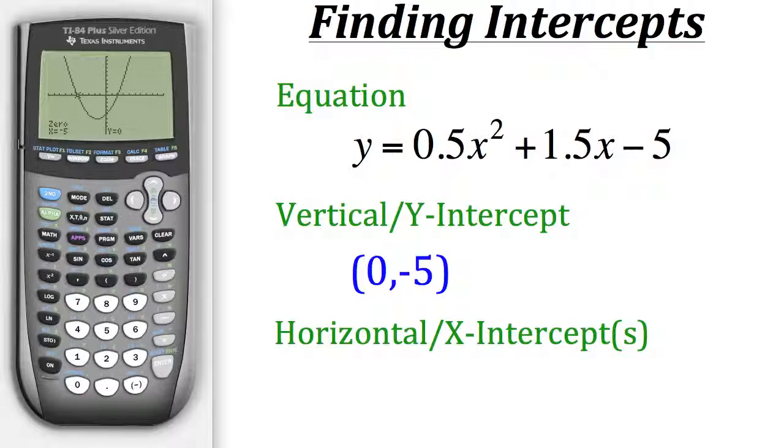So now from this we could see that this x-intercept occurs at x equals negative five. And of course our y-value will be zero. So one of our horizontal intercepts is negative five zero. Now let's find the other one.